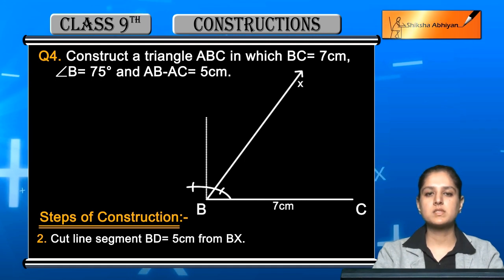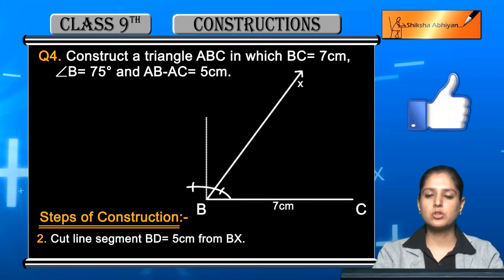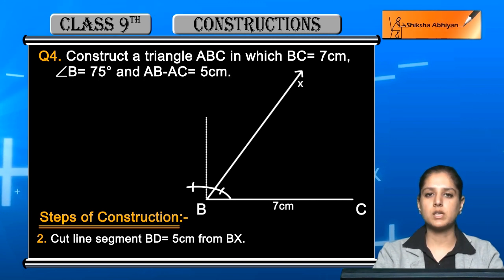Take a compass, open it to 5 centimeter using your scale, place the compass on B, and cut line BX. Where it cuts the line, mark that point as point D.